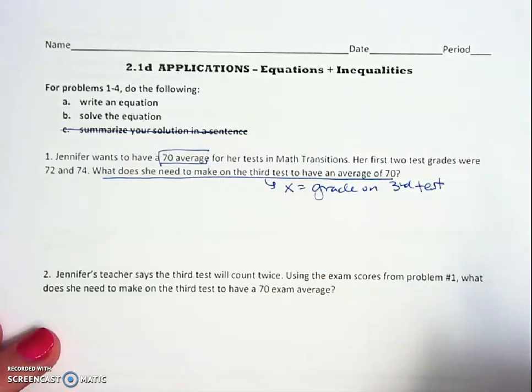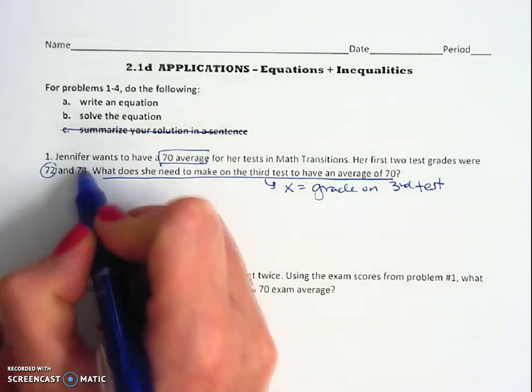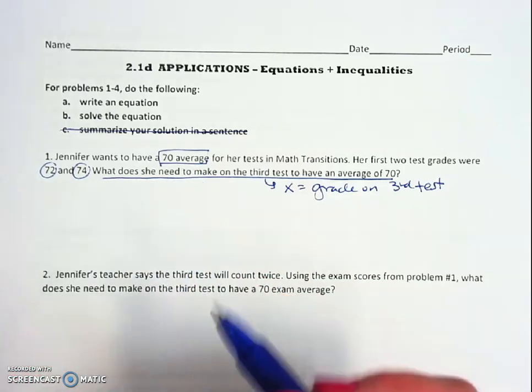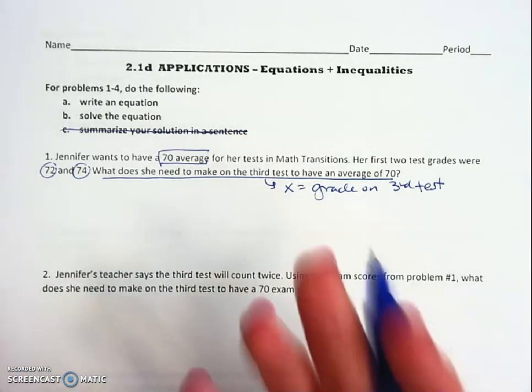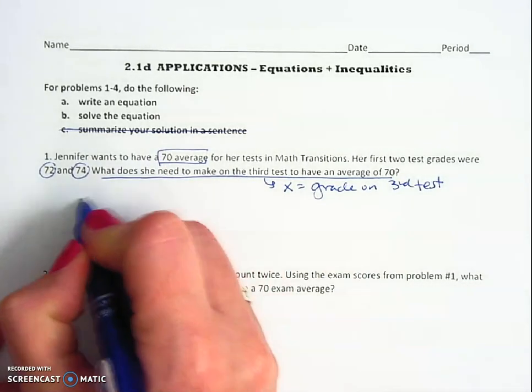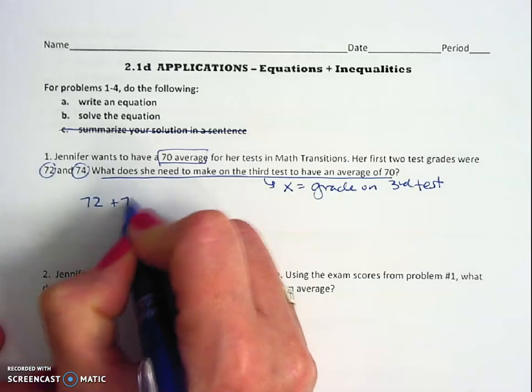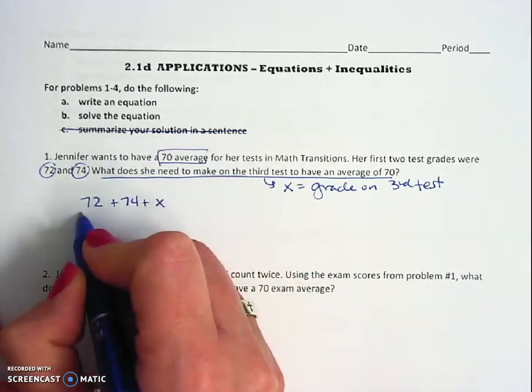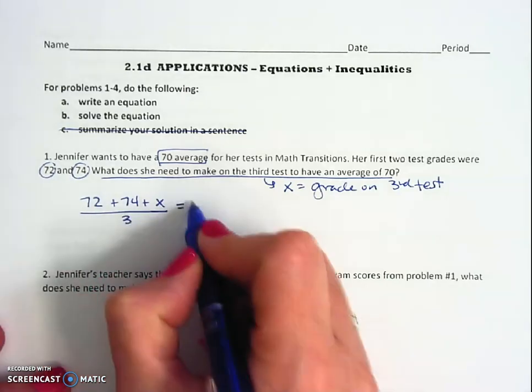We know that she wants to make a 70 average and that her first two test grades are 72 and 74. Remember what the word average means: you have three grades, you find the average by adding them and dividing by three. So our three grades are 72, 74, and the unknown one, so we add them up, we divide by three, and we want that to equal 70.